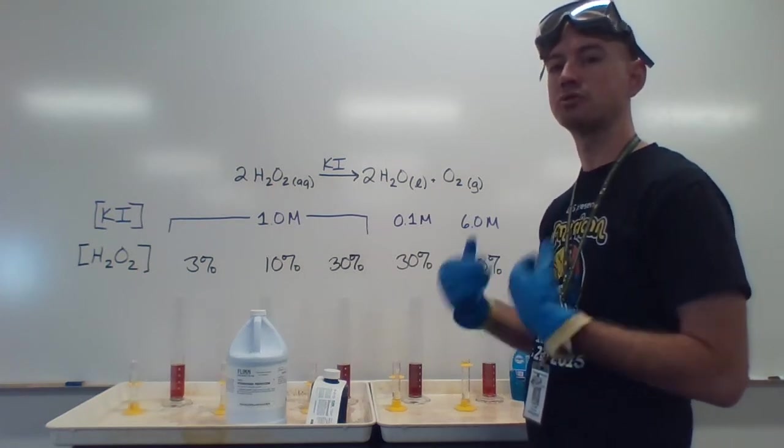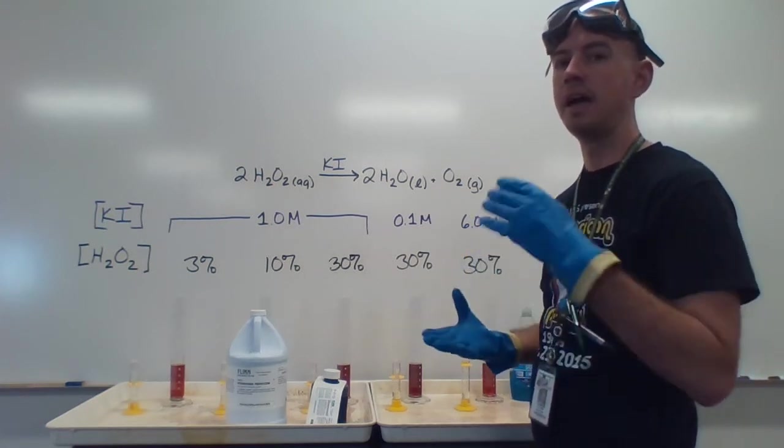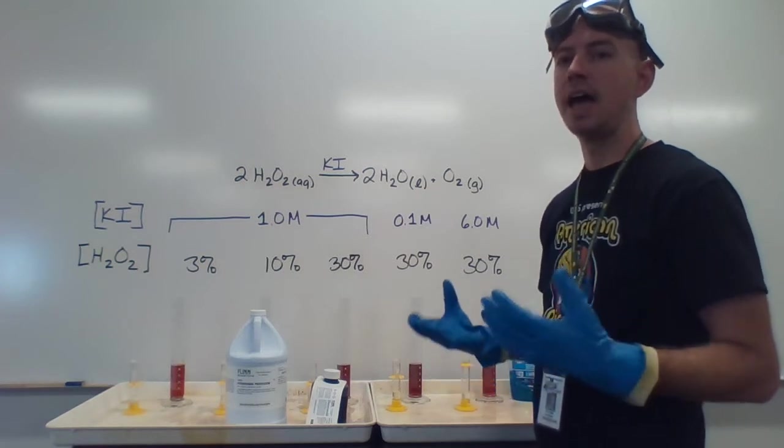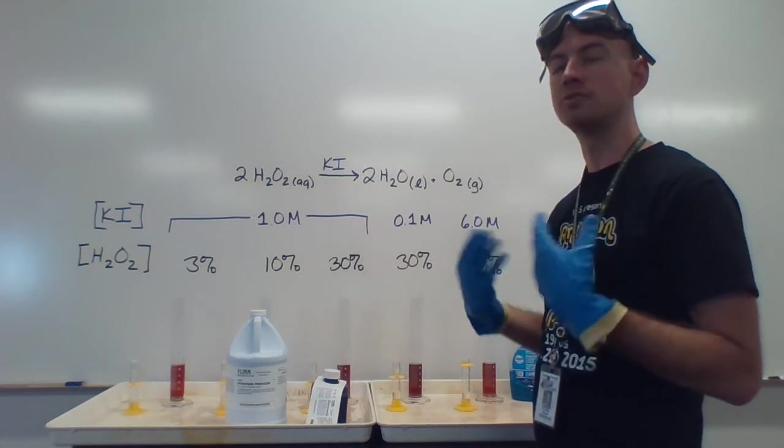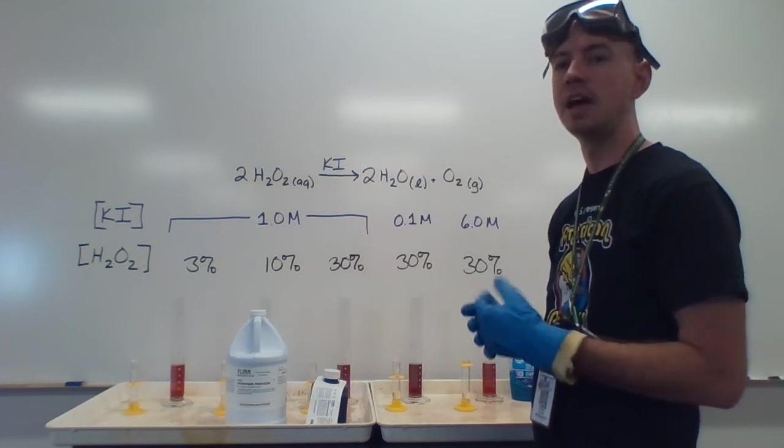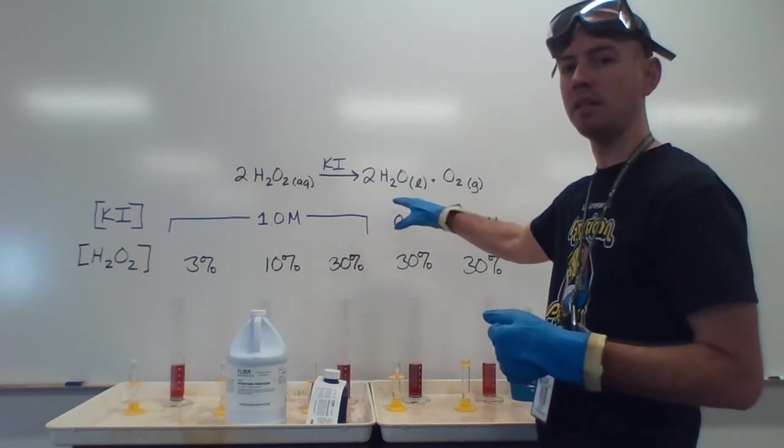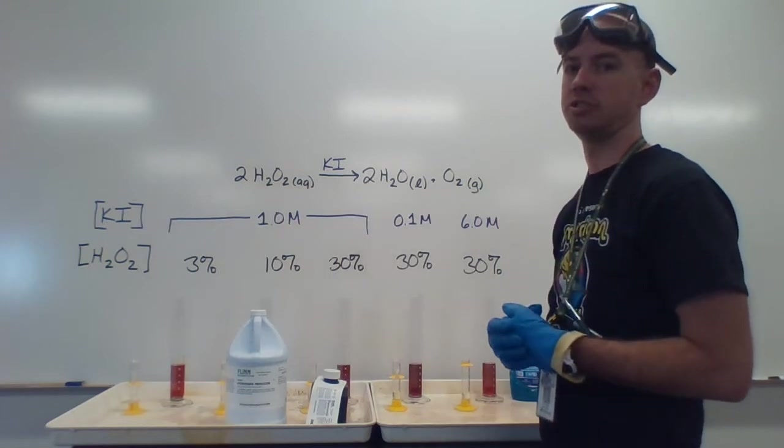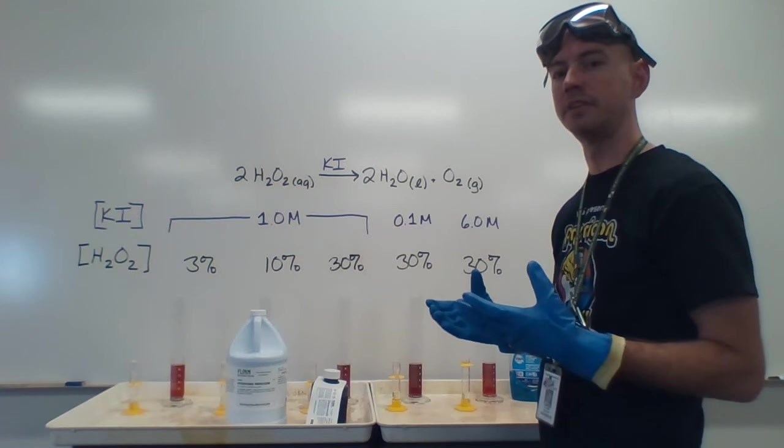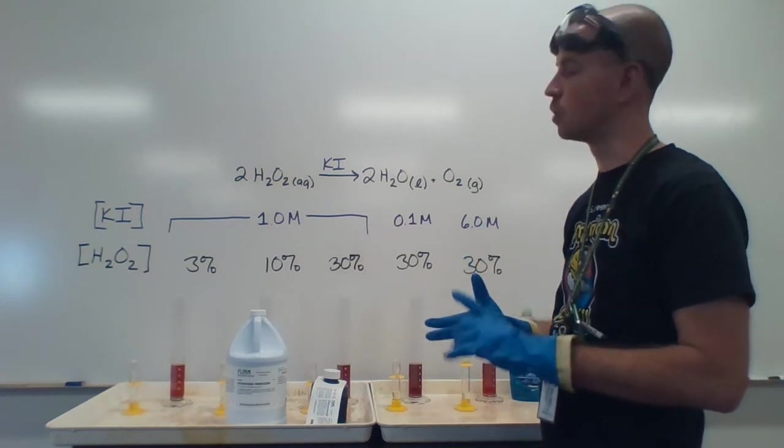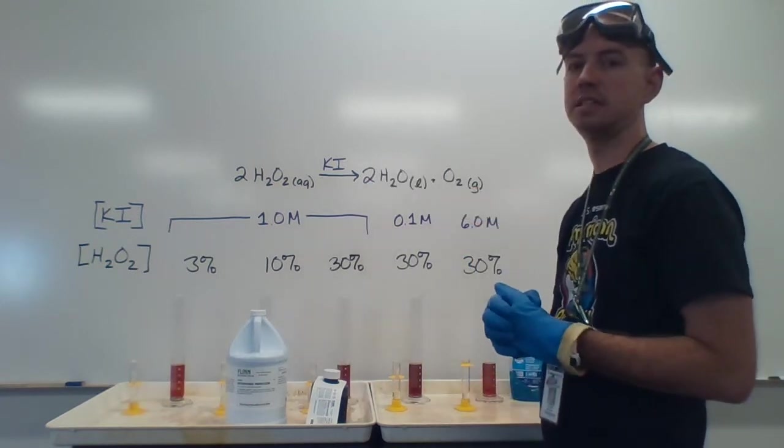This reaction happens gradually over time. If you buy hydrogen peroxide at a pharmacy or grocery store, you'll see it has an expiration date on it because over time it decomposes, and ultimately you'll have a bottle of water with some oxygen in there. We can speed that decomposition up with a couple different catalysts. Yeasts work, or the one we'll be using is potassium iodide.